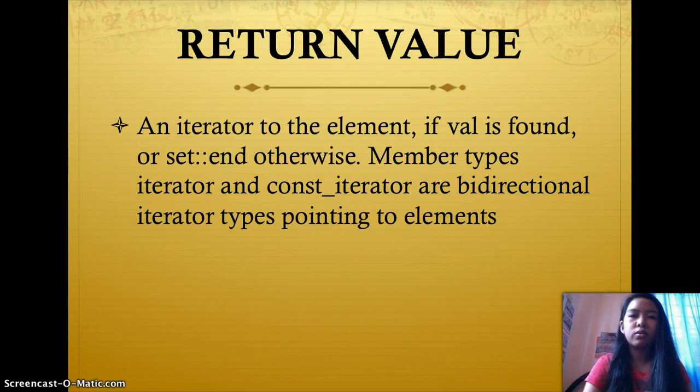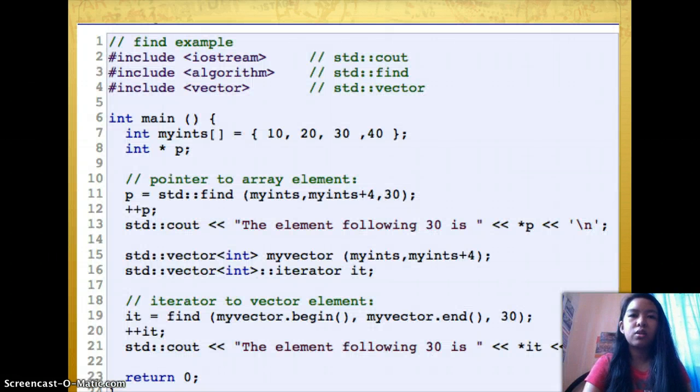The return value is an iterator to the element if val is found, or set end otherwise. Member types iterator and const_iterator are bidirectional iterator types pointing to elements.